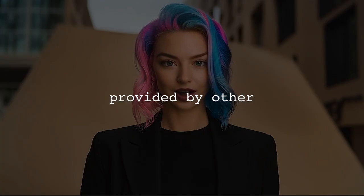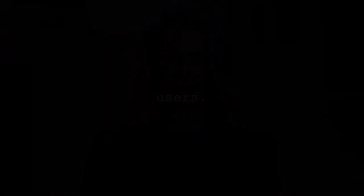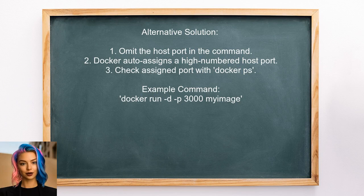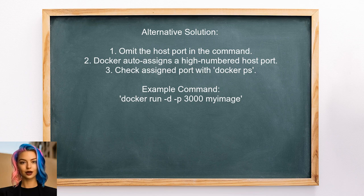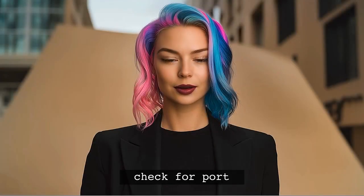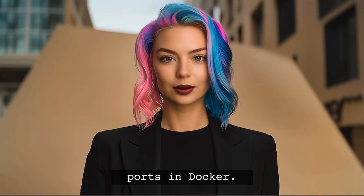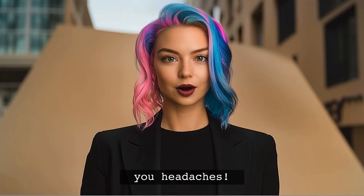Let's look at another answer from the community. If you omit the host port when using Docker — like in the command docker run -dp 3000 my-image — Docker will automatically assign a high-numbered host port for you. You can see which port was assigned by running docker ps. Here's that quick tip I promised: always check for port conflicts when mapping ports in Docker. It can save you a lot of headaches down the line.